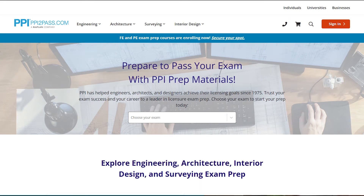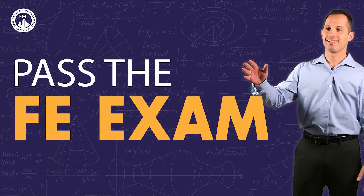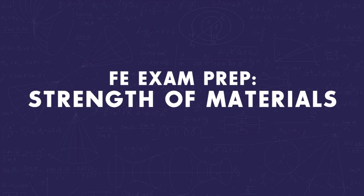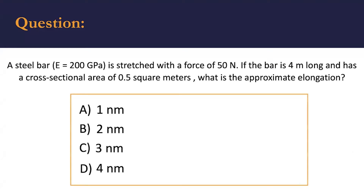A steel bar with a modulus of elasticity of 200 gigapascals is stretched with a force of 50 newtons. If the bar is 4 meters long and has a cross-sectional area of 0.5 square meters, what is the approximate elongation? They provide you with four options, all in nanometers.